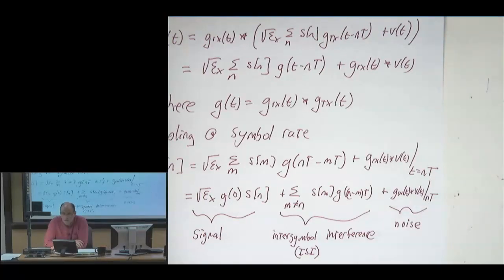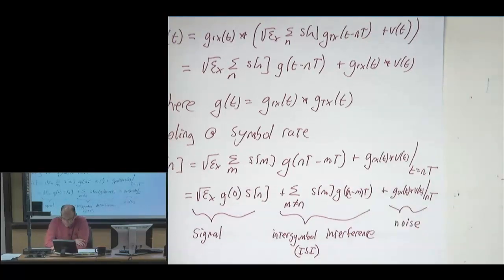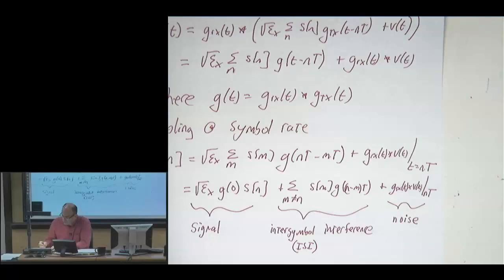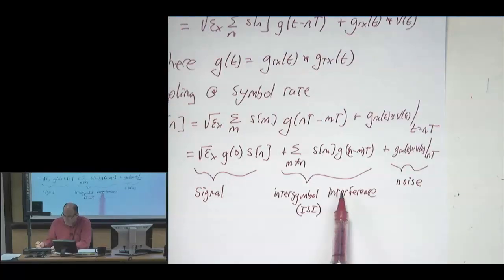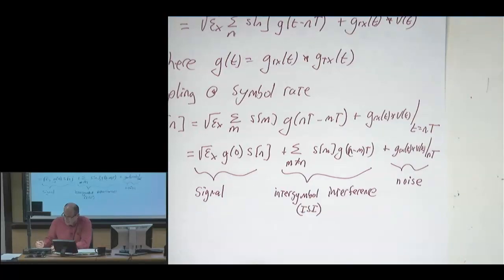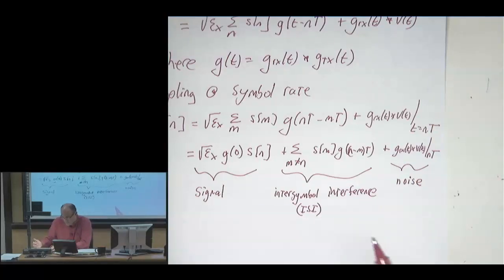To do this, we formulate an optimization problem. We treat ISI as a kind of noise and write a signal power to interference-plus-noise power ratio (SINR), then try to maximize it. The idea is that having a large SINR is good, so maximizing it is our objective.